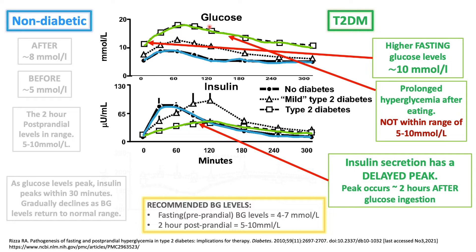Eventually phase 2 will help, but we can see how long it's taking — we have prolonged hyperglycemia. Eventually as glucose levels decline, insulin levels will also decline, but still glucose levels remain high. So with the person with type 2 diabetes, we have higher fasting glucose levels, prolonged hyperglycemia, and insulin taking much longer to peak.